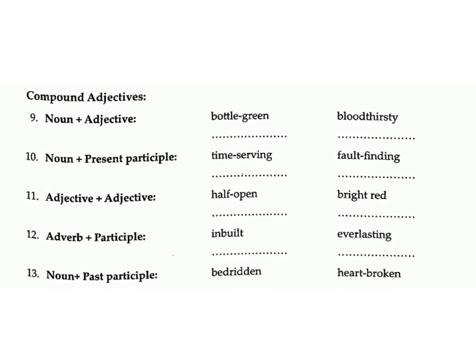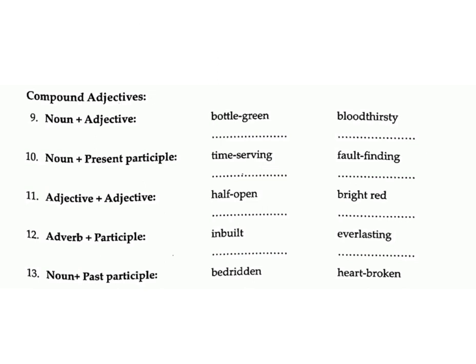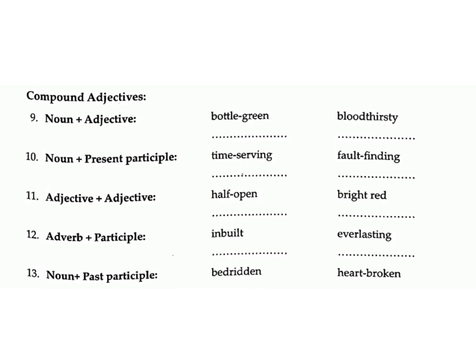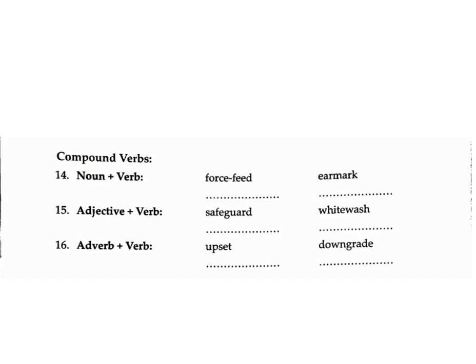11. Adjective plus adjective: half-open, bright red – answers: lukewarm, red-hot. 12. Adverb plus participle: inbuilt, everlasting – answers: never-ending, long-suffering. 13. Noun plus past participle: bedridden, heartbroken – answers: handmade. Compound verbs. 14. Noun plus verb: force-feed, earmark – answers: browbeat.